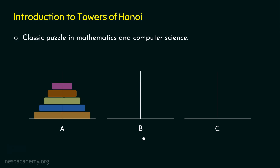There are some rules that need to be followed. We are not allowed to move multiple discs at a time — we can only move one disc at a time. Also, we cannot place a larger disc above a smaller disc. The placement order must be maintained. We can use tower C as the intermediate. The myth goes that when the priests complete the task, the world will end.